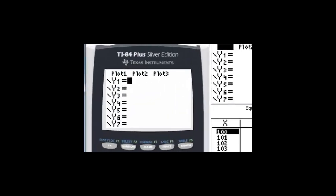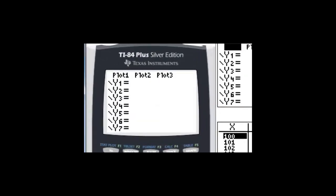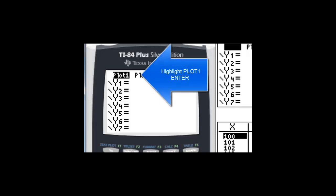So the first thing we want to do is go to the y equals screen, and then we want to arrow up to plot 1, and then press enter. This will make sure that we've turned on our plotter so that it will plot the points we want to put in.